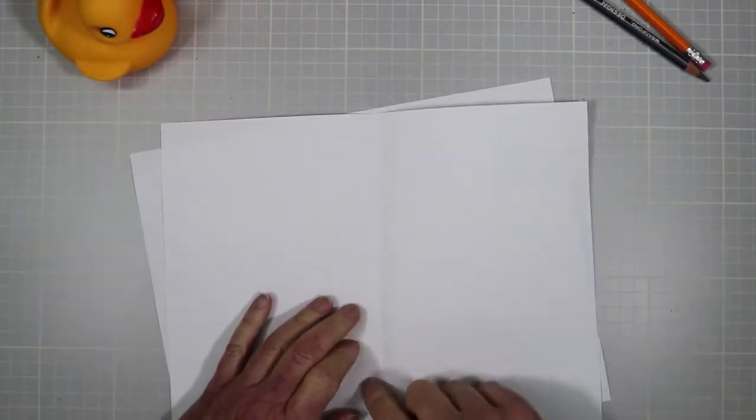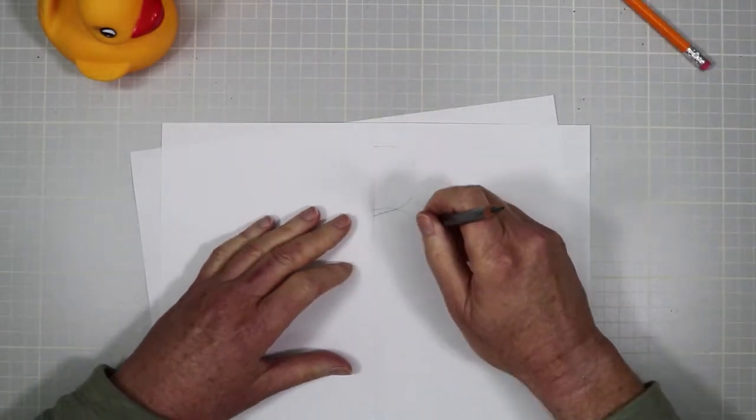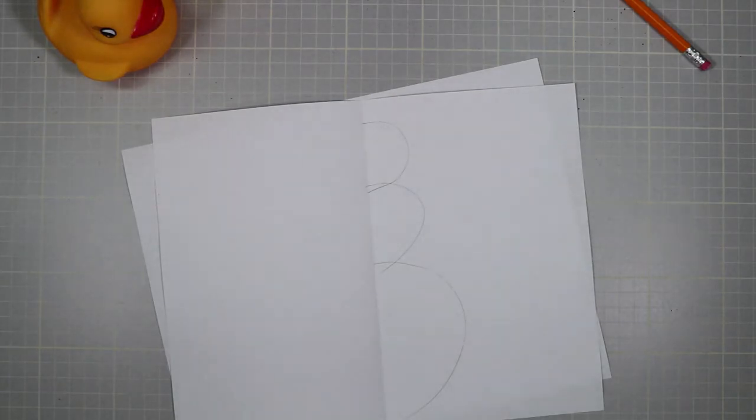I'm going to take one sheet and fold it in half, and on one half of this midline, I'm going to very lightly draw, very generally draw, head, thorax, and abdomen. It looks a little bit like half a snowman.